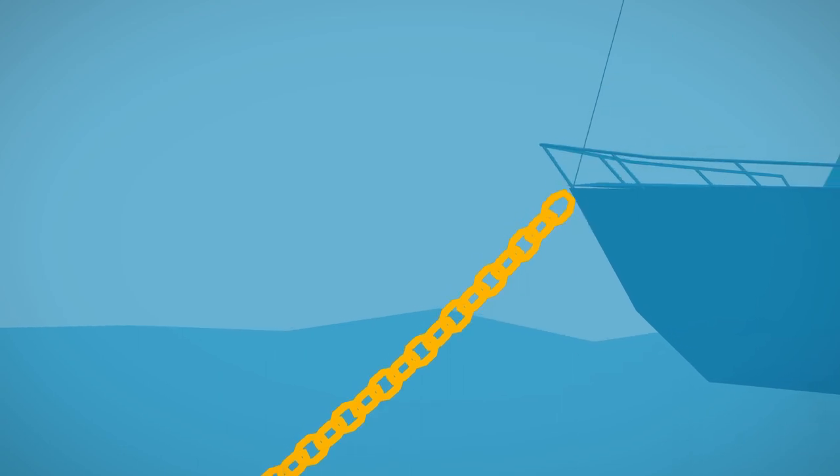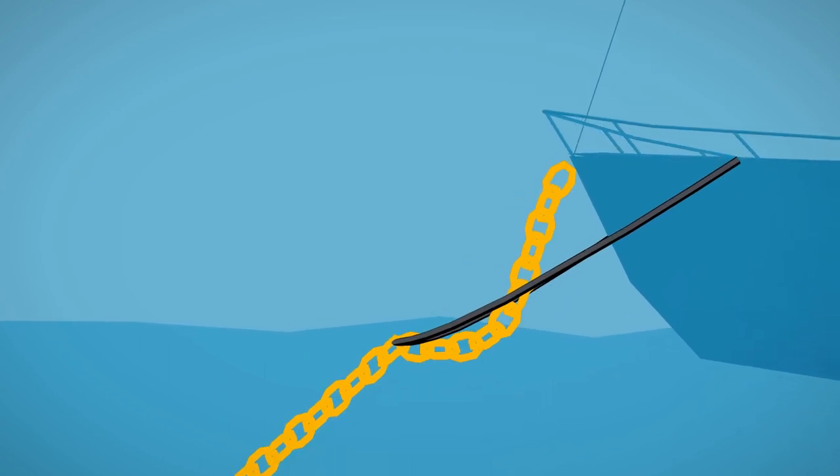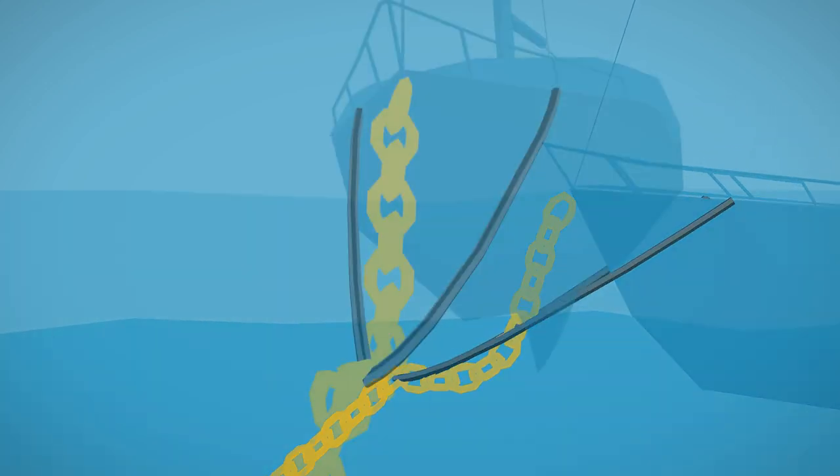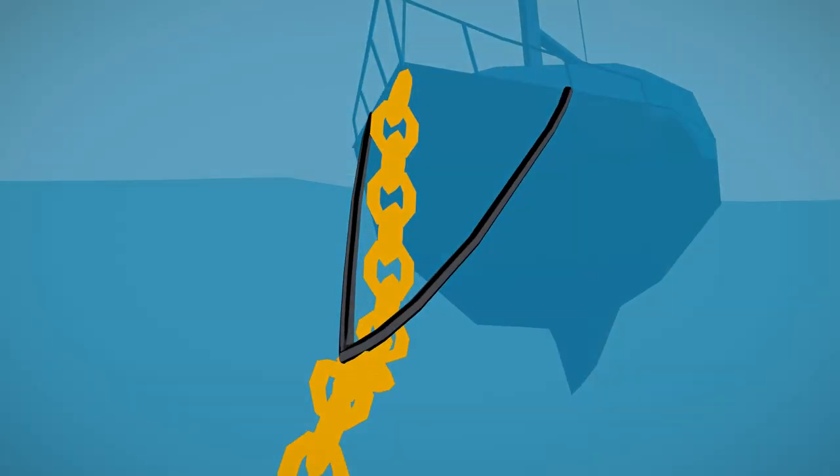This problem can be solved with something called a snubber. A snubber is simply a length of rope which takes up the strain on the chain and acts like a shock absorber. You'll often see it as a bridle connecting the cleats on both sides of the boat.